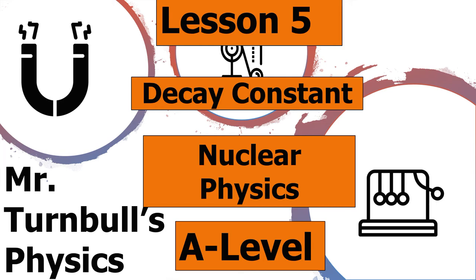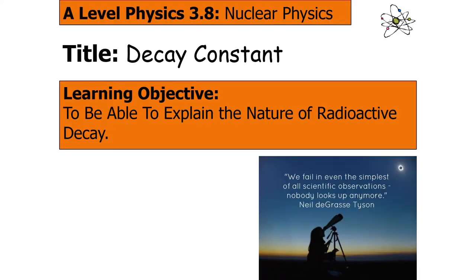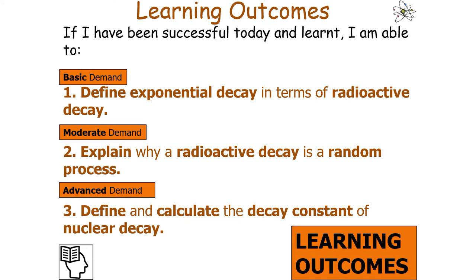Hello and welcome to this lesson on the decay constant, which is part of the nuclear physics topic in AQA A-level physics. In today's lesson we're going to explain the nature of radioactive decay and understand the concept of the decay constant. By the end, you should be able to define exponential decay in terms of radioactive decay, explain why radioactive decay is a random process, and define and calculate the decay constant of nuclear decay.